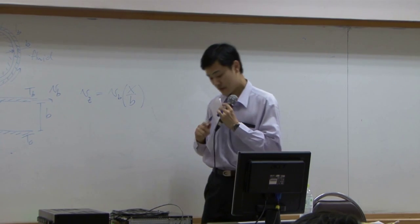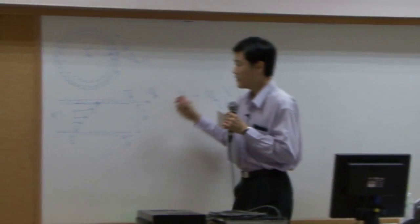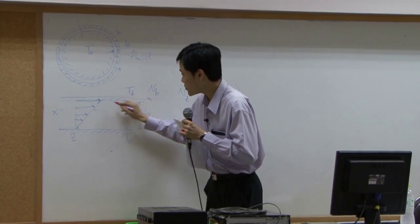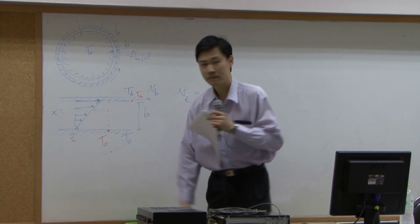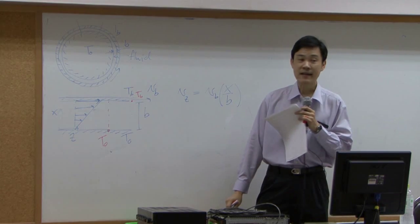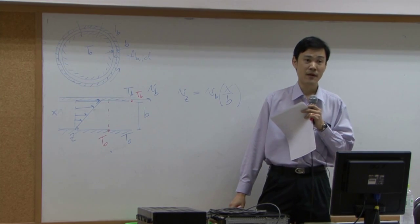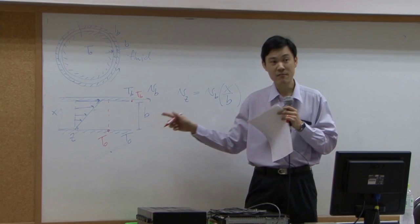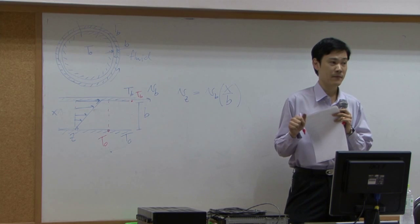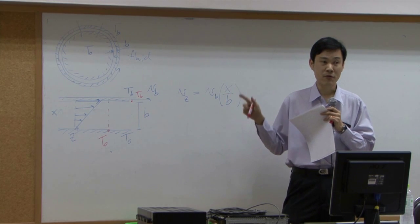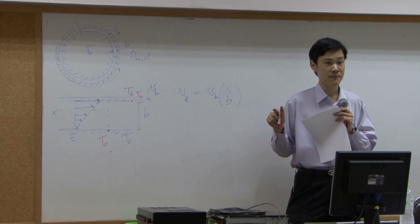Now you can consider temperature or consider energy. You have temperature here, suppose this is T0, this is TB. What kind of temperature profile that you are expecting here? Do you expect linear temperature profile first of all? Is temperature profile supposed to be linear? How do you determine whether it's linear or not?